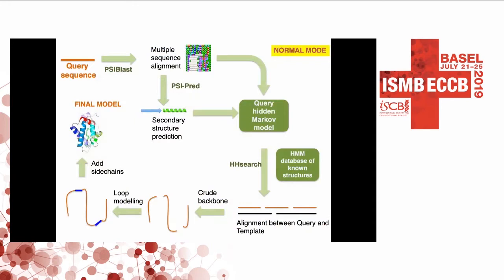I'll explain in a little more detail how FIRE works. The user submits their query sequence, and then PSI-BLAST is run to identify homologous sequences and make a multiple sequence alignment. This multiple sequence alignment is fed into PsiPred to predict secondary structure of the protein. Both of these are used to generate a hidden Markov model of the query sequence, which we then use with HH search to search against a database of known structures for which we have hidden Markov models already generated.